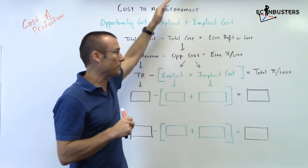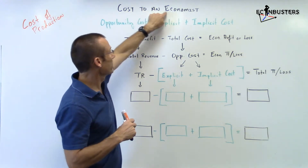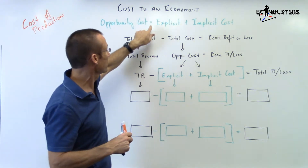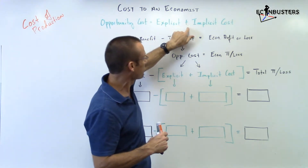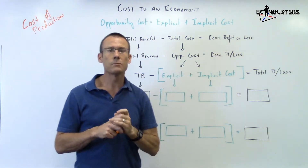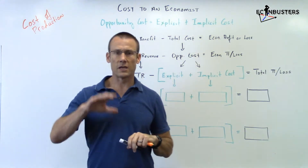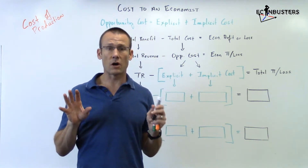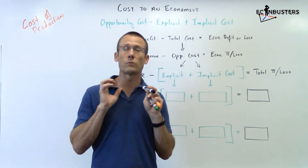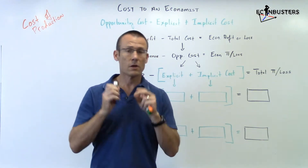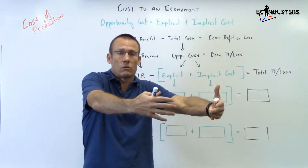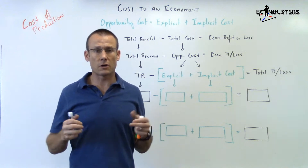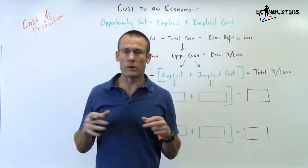Let me take you through this whiteboard. Cost to an economist is opportunity cost. What is opportunity cost? It equals the explicit plus the implicit cost. Let's talk about explicit first — that's what you already understand, because everybody understands explicit costs. Explicit costs are the costs associated with cash outlays of doing something — the cash outlay you have to make to go do that thing.